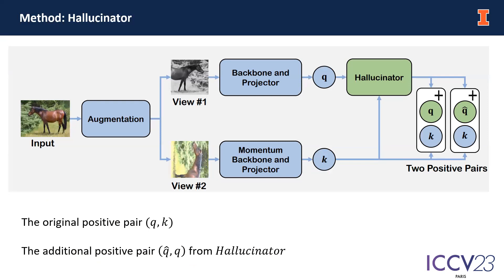Now let's talk about the overall pipeline of the proposed methods. The figure shown here is a traditional contrastive learning framework. We have one image encoded into two positive views with various kinds of data augmentation methods. The encoder maps two views from image space to feature space, so we obtain two feature vectors Q and K. Then we introduce the proposed hallucination signatures to reduce the mutual information among Q and K, and eventually get another positive pair Q and K.